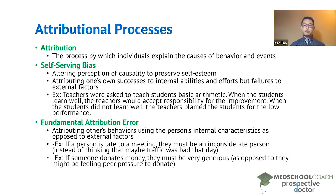Next, we have fundamental attribution error. Fundamental attribution error occurs when an individual attributes another person's behavior using the person's internal characteristics as opposed to external factors. As compared with self-serving bias, fundamental attribution error doesn't have anything to do with preserving self-esteem — it's essentially saying that when you look at other individuals, you explain their behaviors using internal characteristics as opposed to external factors.